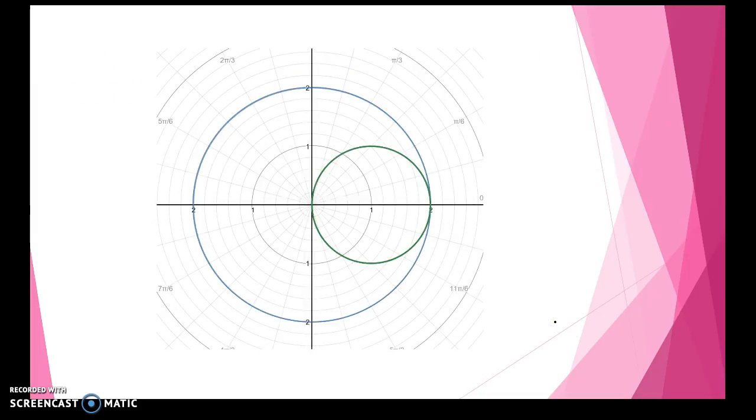So looking at the two graphs, r equals 2 is your graph in blue, r equals 2 cosine theta is your graph in green, and you'll see that there is only one point of intersection. And 0 and 2π are not the only answers. It could be 2 comma 4π, 6π, 8π, but we generally stick between 0 and 2 theta.